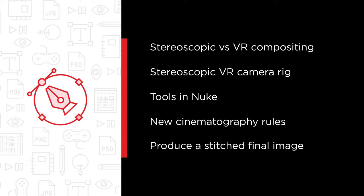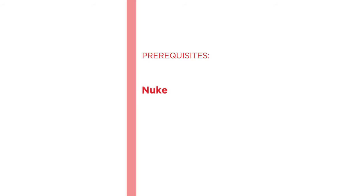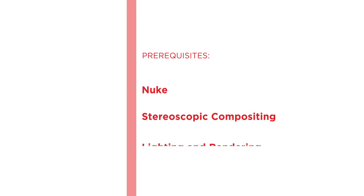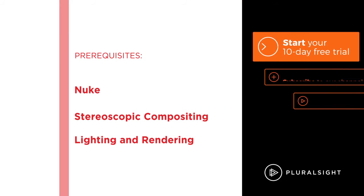By the end of this course you'll not only be familiar with this new filmmaking tool, but also ready to use it on your own projects. Before beginning the course you should be familiar with both Nuke, stereoscopic compositing, and basic lighting and rendering in Maya. You should also have a VR headset available, like Google's Cardboard or the Gear VR, to get the most out of the images that we'll render and composite.